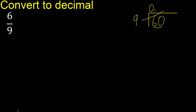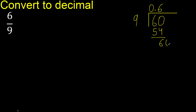9 multiplied by which number is nearest to 60 but not greater? 9 multiplied by 7 is 63 — that is greater. Multiply by 6 is 54, which is not greater. 60 minus 54 is 6. Next, since 6 is not a full number, complete it with 0.